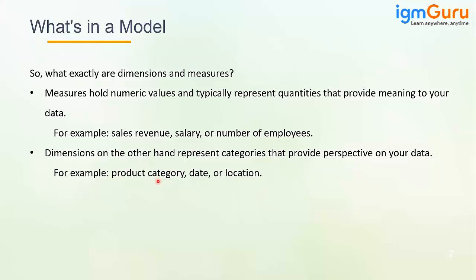One more example: age — even though it is numerical, you are not supposed to perform most mathematical operations on it. Average can be done, but sum of ages or multiplication cannot. So it is considered a dimension. Similarly, ID numbers — you are not supposed to do any mathematical operations on them; they provide a category or unique perspective for your data, which is why they come under dimension.